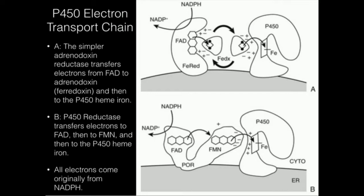NADPH is going to transfer its electrons to an FAD coenzyme of adrenodoxin reductase. Then adrenodoxin reductase, with those electrons in the FAD, is going to transfer those electrons one at a time to adrenodoxin, which is an iron-sulfur protein. This little square with the two dots is an iron-sulfur center. The electrons one at a time go from FAD to the iron-sulfur center. Whenever adrenodoxin gets the electron, it moves over to the P450 and transfers that electron to the heme iron. Then adrenodoxin goes back to adrenodoxin reductase, gets the second electron from FAD, and delivers it to P450.